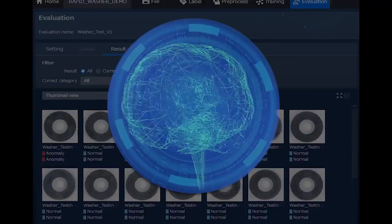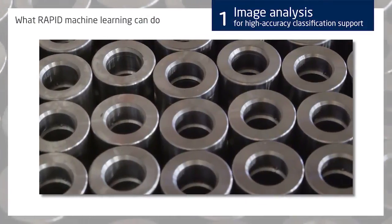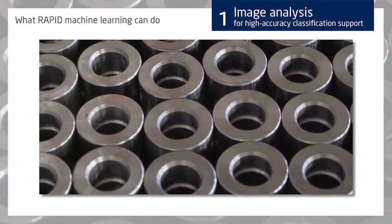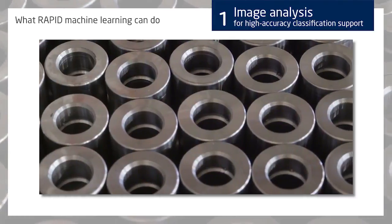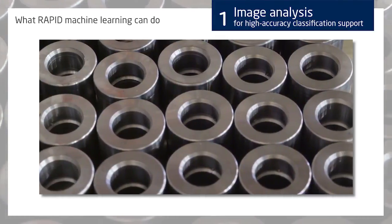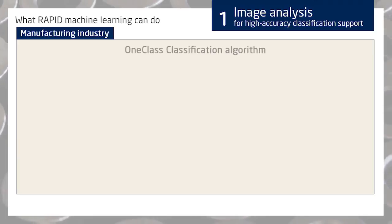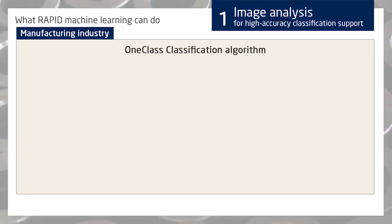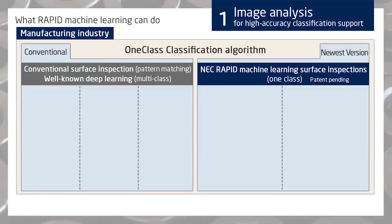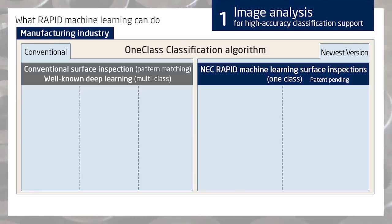When it comes to decision-making in business, Rapid Machine Learning provides high-accuracy image classification and detection to support it. Let's look at the one-class classification algorithm, which is a new feature of Rapid Machine Learning that is extremely powerful for manufacturing inspections.